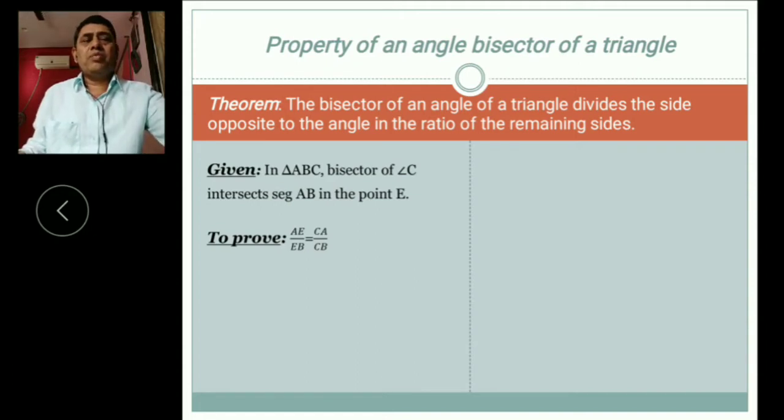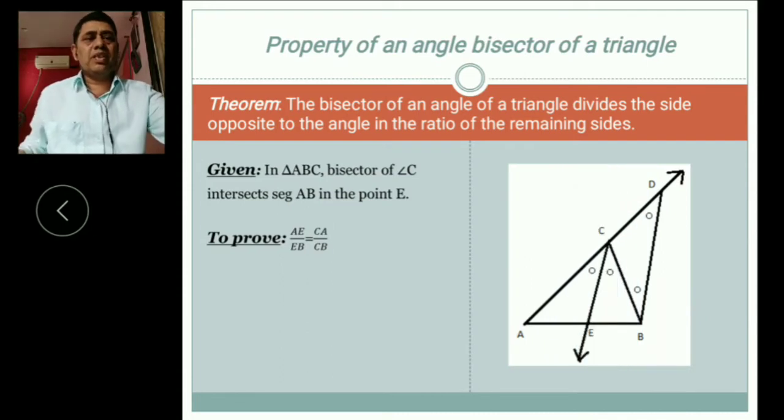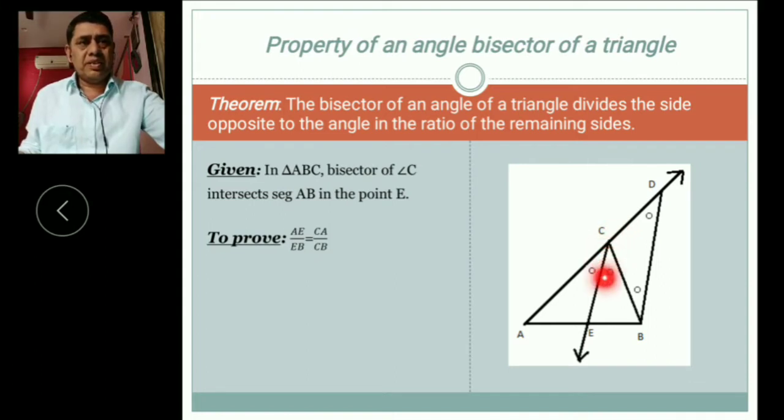We draw a figure for that. Suppose this is triangle ABC. Then we bisect the angle C by using ray CE. Bisect means by that ray, angle ACE and angle BCE both are congruent.